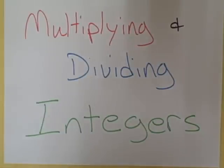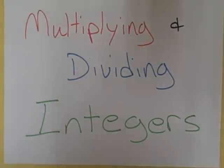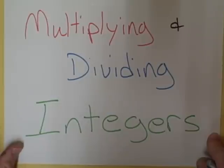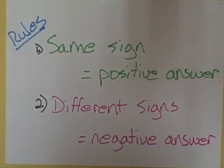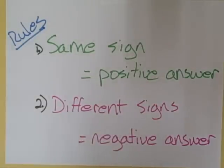In this lesson, we're going to be looking at multiplying and dividing integers — positive and negative numbers. There are basically two rules that you have to remember when you're working with integers and you are multiplying and dividing them.